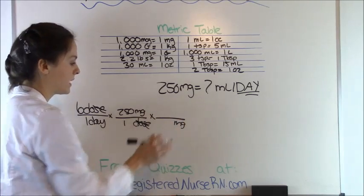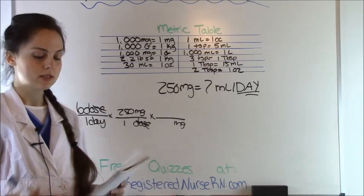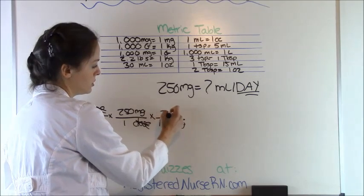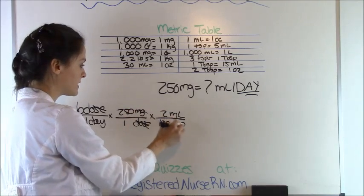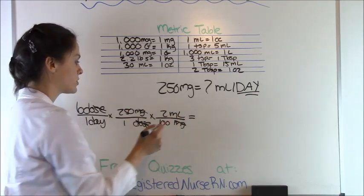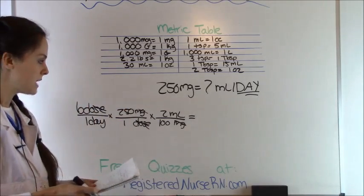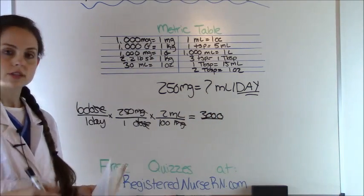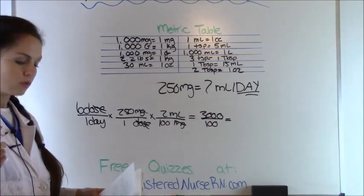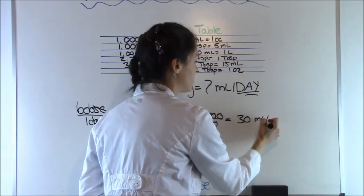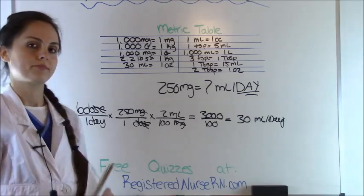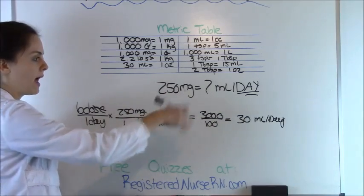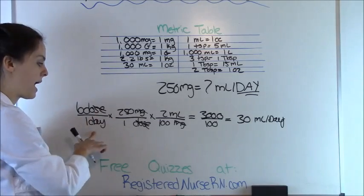Milligrams moves down diagonally. The pharmacy dispensed 100 milligrams per two mLs — so 100 milligrams on the bottom and two milliliters on top. We're trying to get milliliters per day, and everything has canceled out except milliliters and day, so we can solve. Multiply the top: 6 times 250 times 2 equals 3,000. The bottom is just 100. So 3,000 divided by 100 equals 30. You are going to be giving 30 milliliters per day. If it were a per dose question, you would skip the first step — but because it asks for per day, we had to add that extra step.